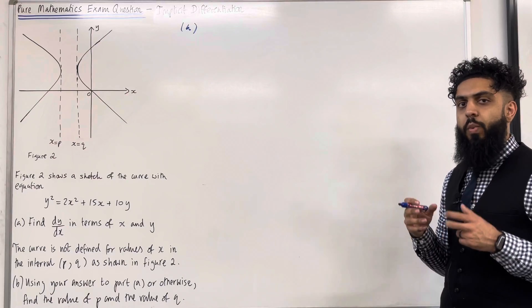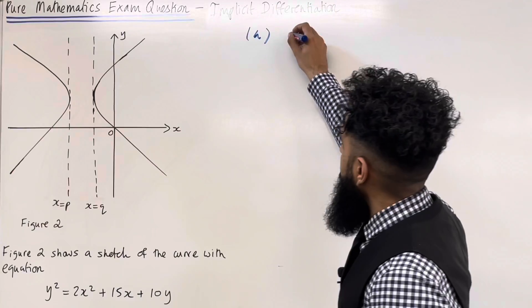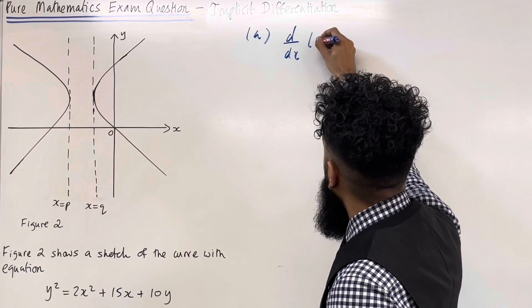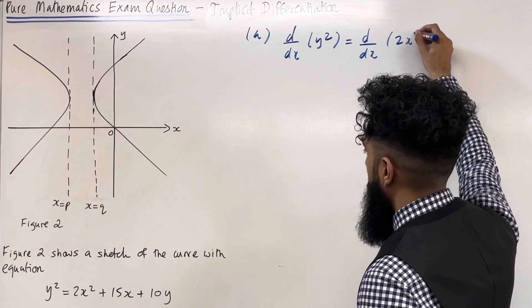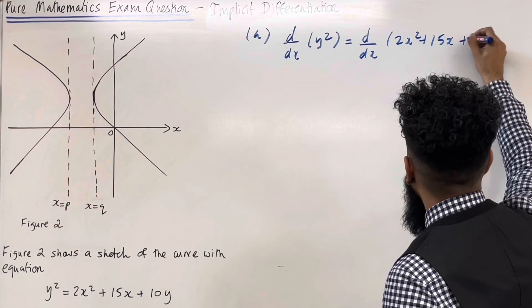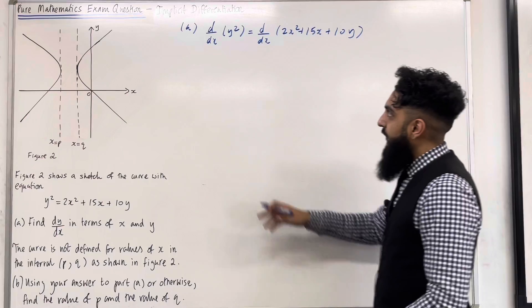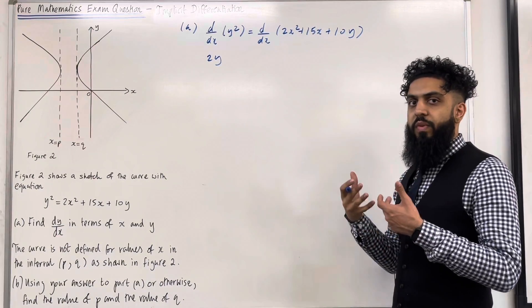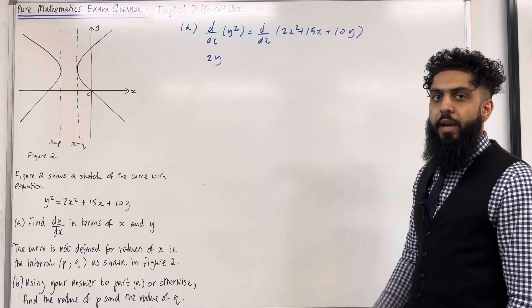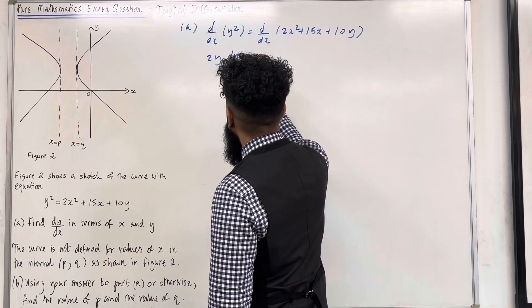So we're going to differentiate with respect to x the left-hand side and the right-hand side. So I've got d over dx of y squared is equal d over dx of 2x squared plus 15x plus 10y. Let's start off with the left-hand side. So y squared differentiates to 2y. But because we're differentiating with respect to x, we need to stick in dy over dx. So we've got 2y dy over dx.